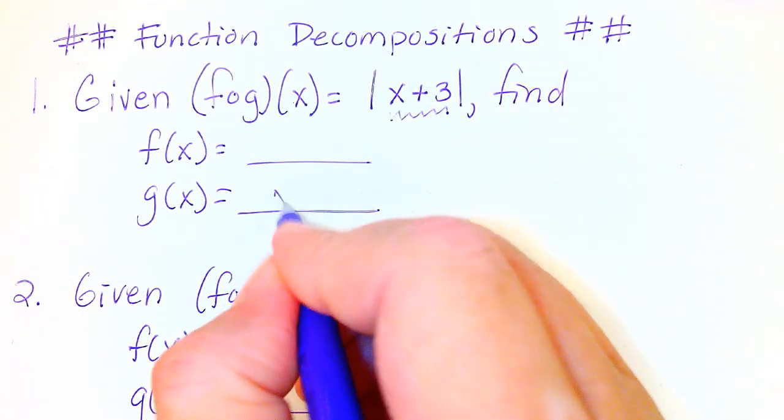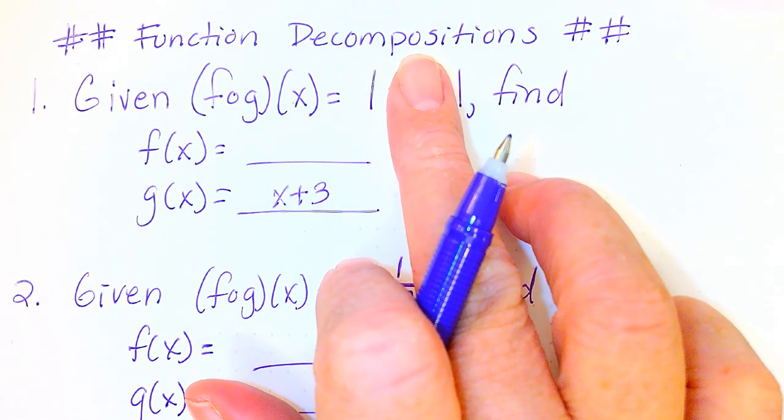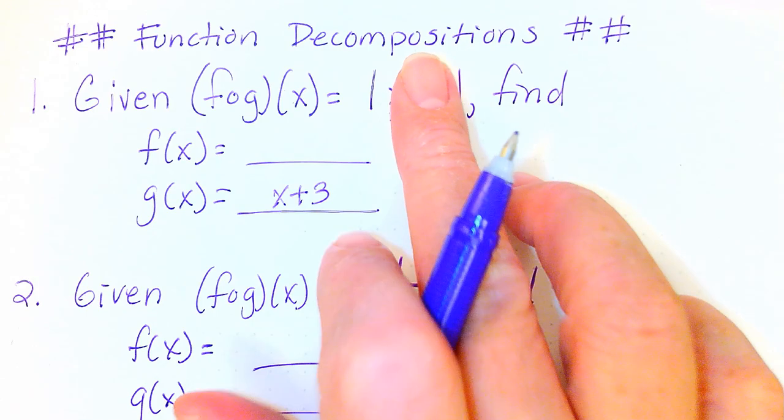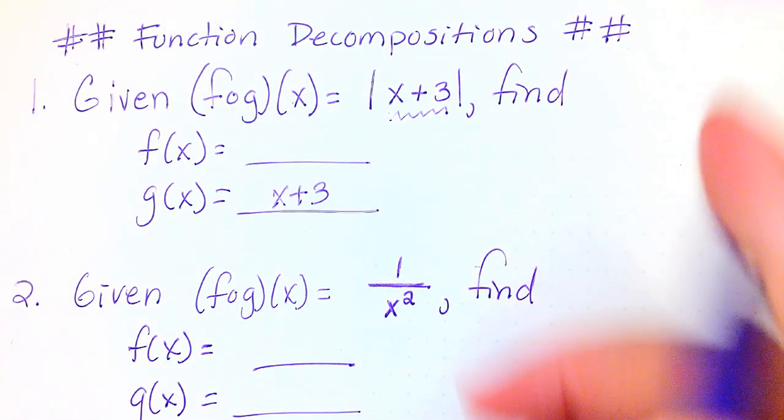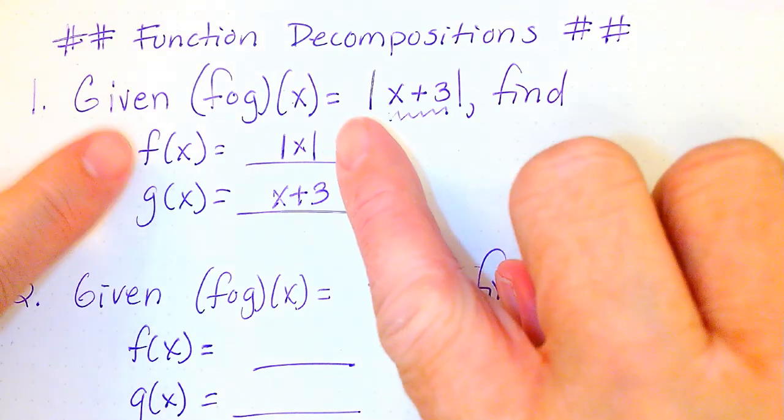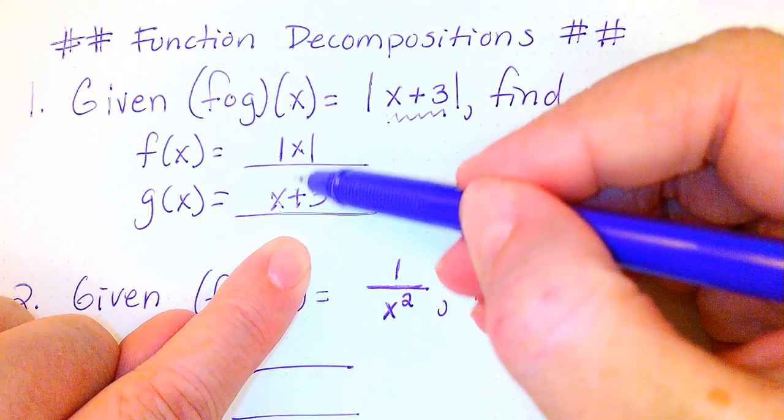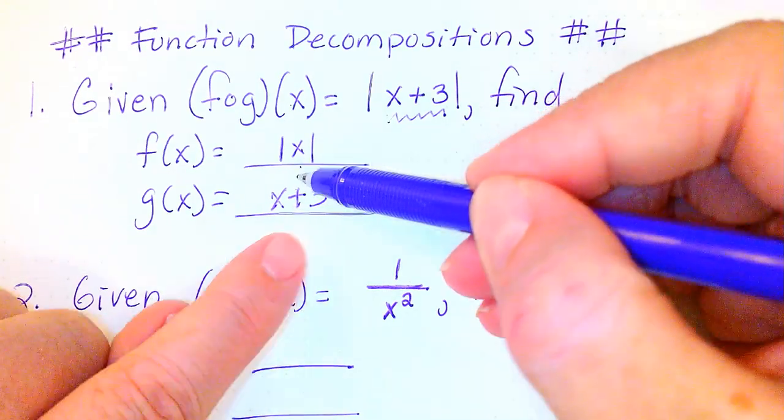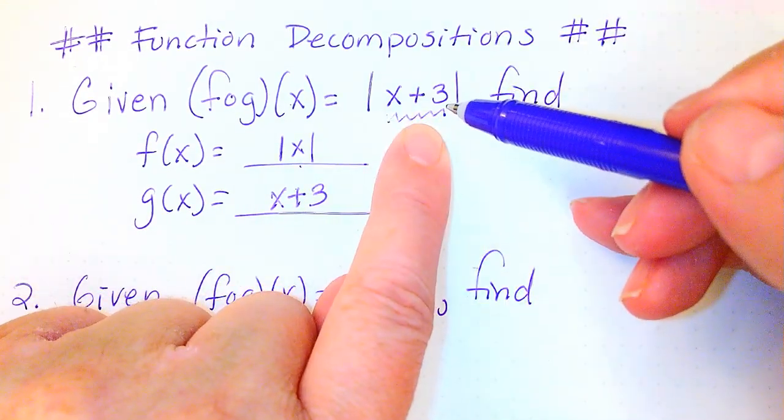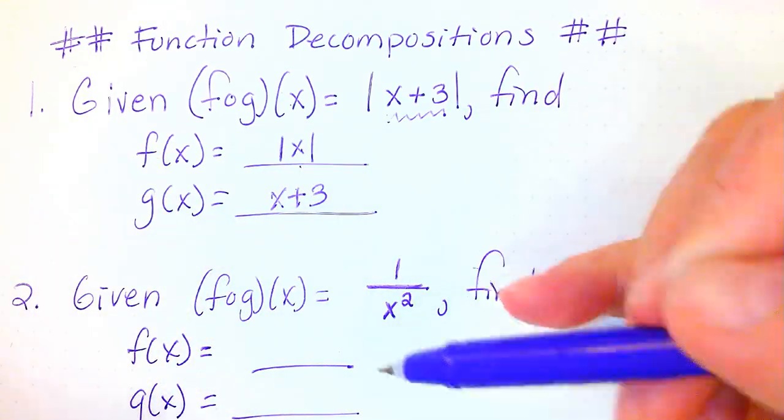So if I was to take this x plus 3 out and replace that with just an x there, I would have the absolute value of x and that would be my f of x function. How do we check this? If you have f of g of x and you have said that this is f and this is g, if you were to take this g and plug it into that x right there, would you get back the f of g of x function? And in this case you would. So then you've picked the correct f and g.